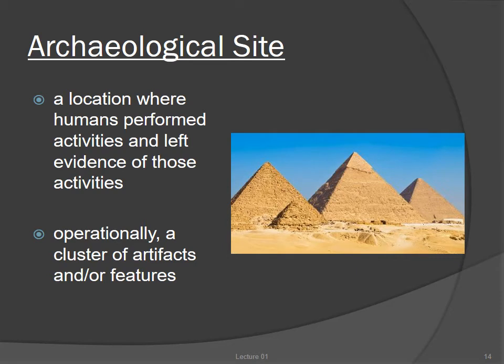The fourth type of archaeological data is the site, which can be defined as a location where humans performed activities and left evidence of those activities. Operationally, we recognize sites as clusters of artifacts and/or features. We use the artifacts, features, and ecofacts found at a site to reconstruct the activities that took place there and fit those activities into a reconstruction of the past culture.